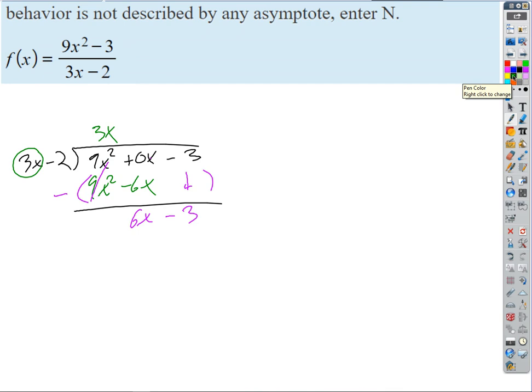So 3x divides into 6x, how many times? 2. Okay, so we get a plus 2. We'll distribute the 2. Gives us 6x minus 4.